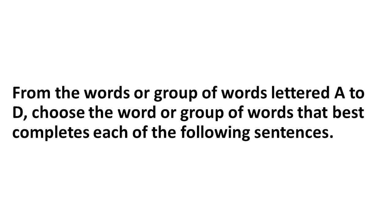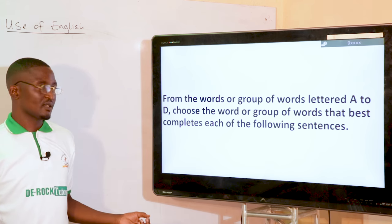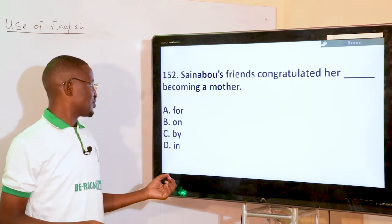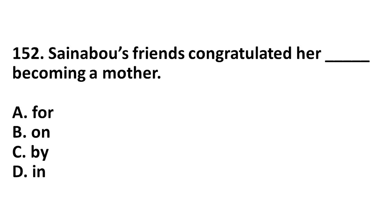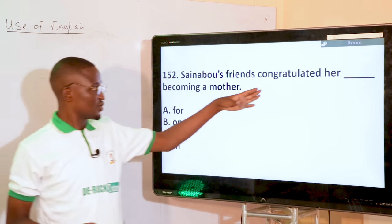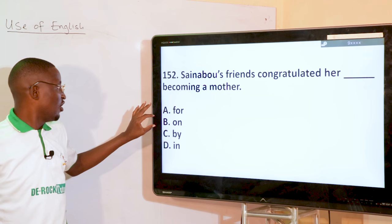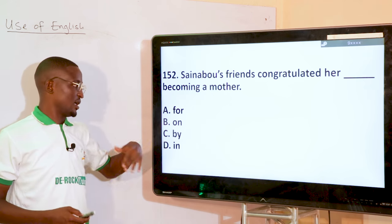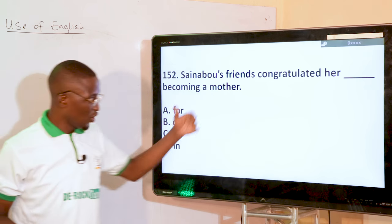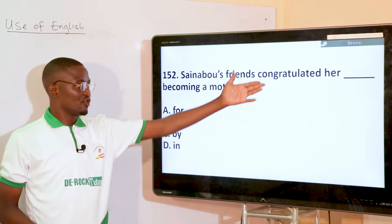From the group of words lettered A to D, choose the word or group that best completes each sentence — the lexical/structural aspect. Stainable's friend congratulated her dash becoming a mother. What preposition do we use after 'congratulation'? That is 'on' — congratulated on becoming a mother. We say 'I congratulate you on your birthday,' not 'for.' So use the preposition 'on' after congratulate.